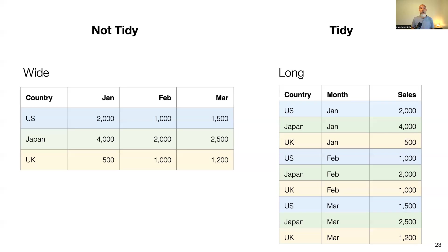What happens if we bring in an expense variable? On the long (right-hand) side, all you need is to add another column called 'expense'. But on the wide (left-hand) side, where do you add expense? Suddenly 2,000 and 1,000 — is that sales or expense? It becomes trickier and trickier with wide format, which is why tidy data is a key concept when deciding how to format your data.